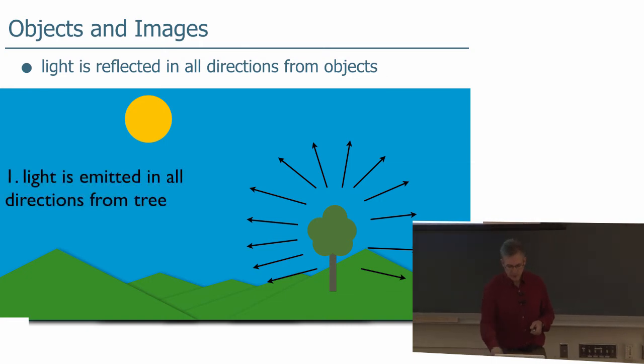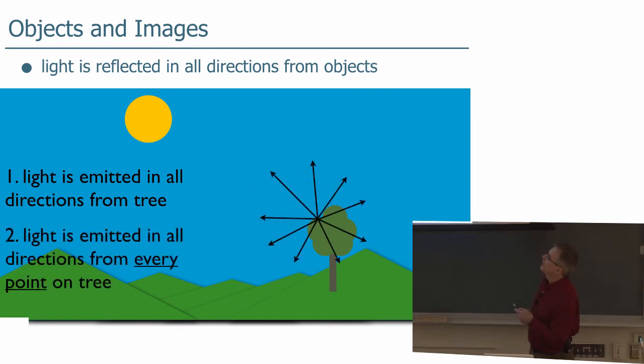Now, firstly, light is emitted in all directions from the tree, and from every point on the tree, light is going in all directions. So whatever point you have on the tree here, you can see it no matter where you are because there's light going in all directions from it.